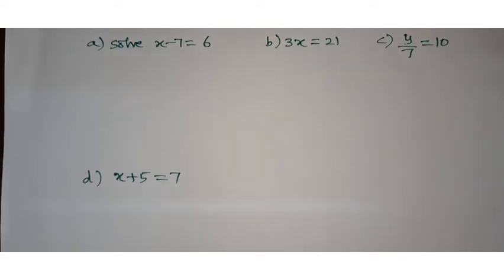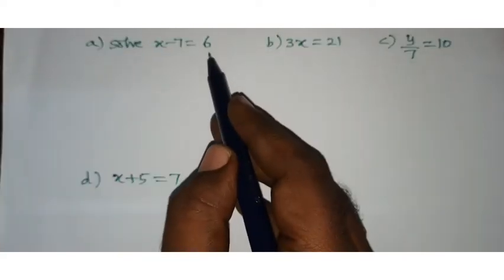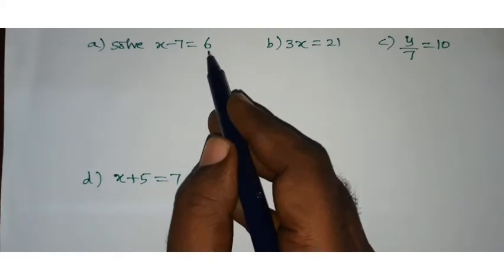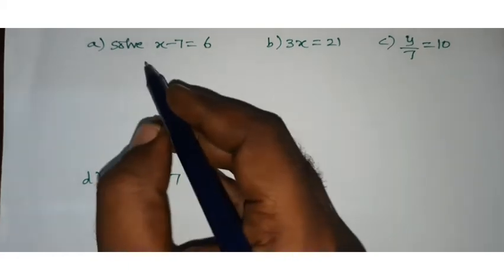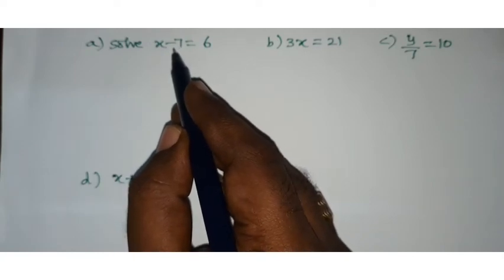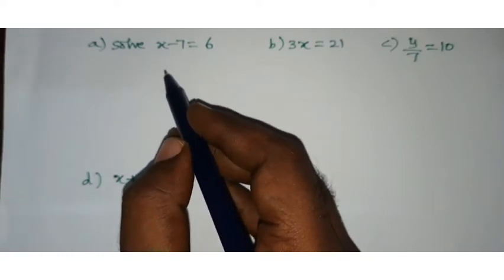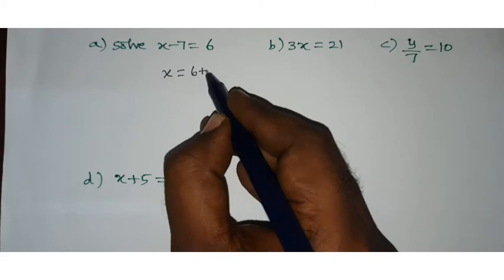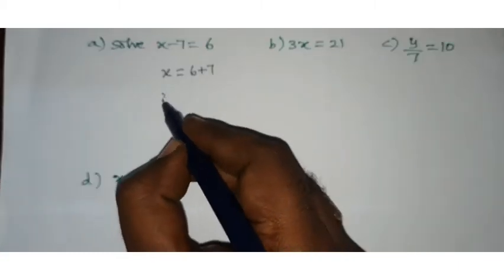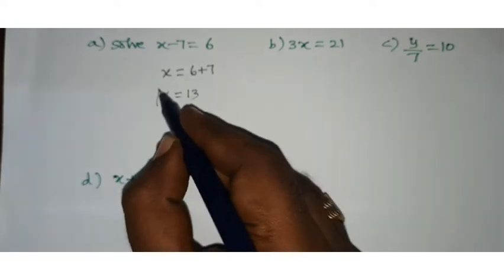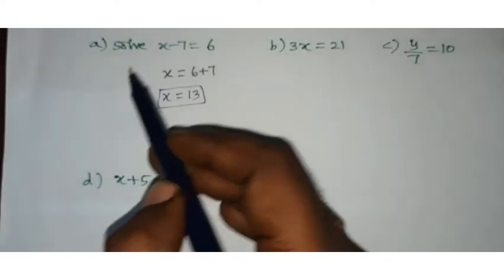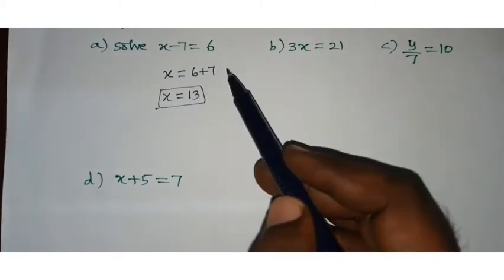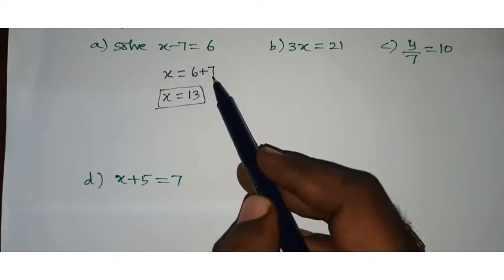First example: x minus 7 equals 6. In place of x, what should come to get the result 6? We need x alone. The extra term is minus 7, so bring that to the other side — minus 7 becomes plus 7. Therefore, x equals 6 plus 7, which is 13. Any addition term going to the other side becomes the opposite sign.